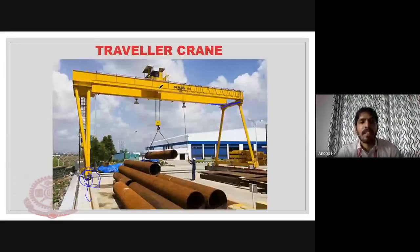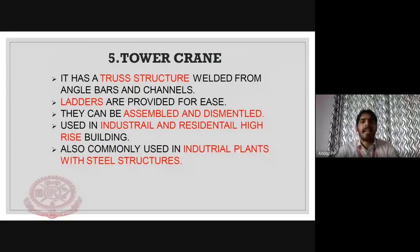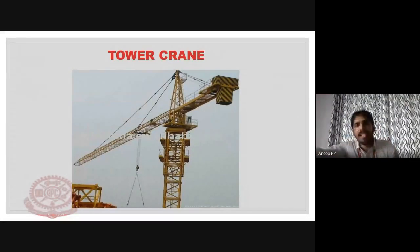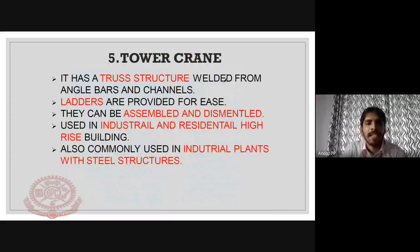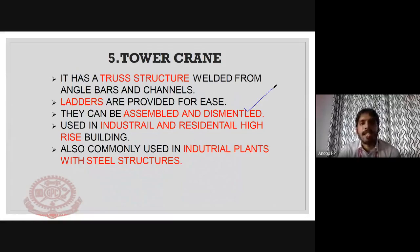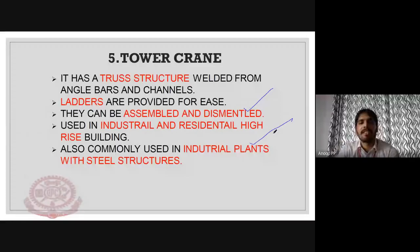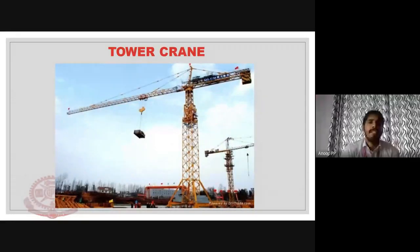Tower cranes are used for very large industries and high-rise construction. They are used for placing precast slabs and for constructing industrial and residential high-rise buildings of 20 stories or more. Tower cranes have a truss structure with ladders provided for access, and the height is adjustable. They are also used for steel structure work.